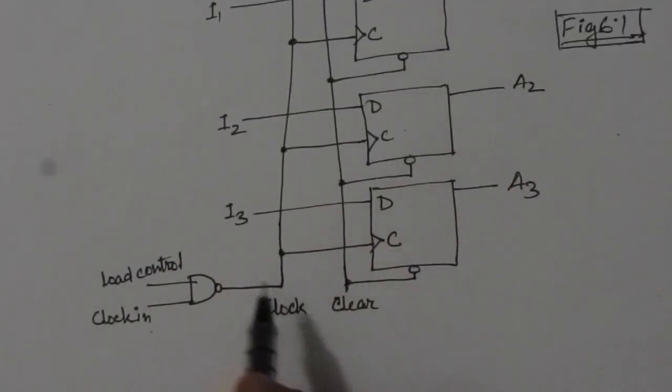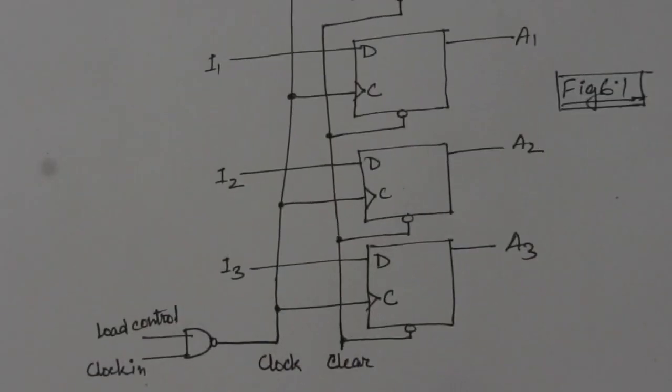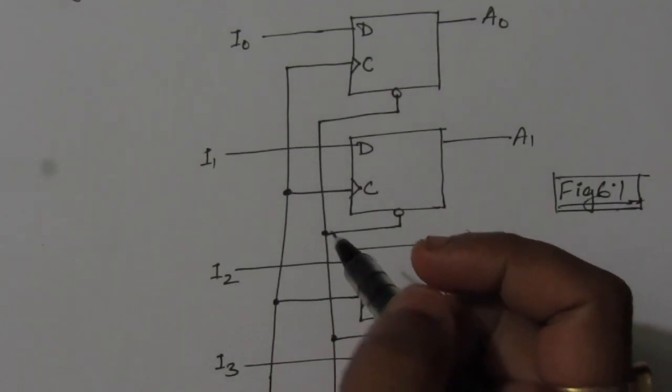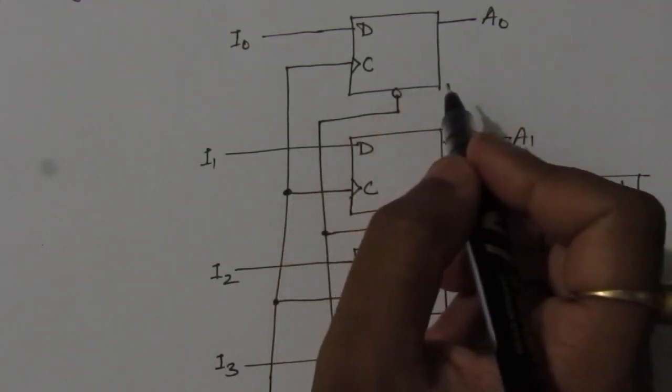then we have to explain why this circuit might have operational problems. So after this modification, what will be the operational problem of this circuit, we have to explain. As per the explanation given in the book of figure 6.1, and whatever we have here, at a rising edge of the clock,